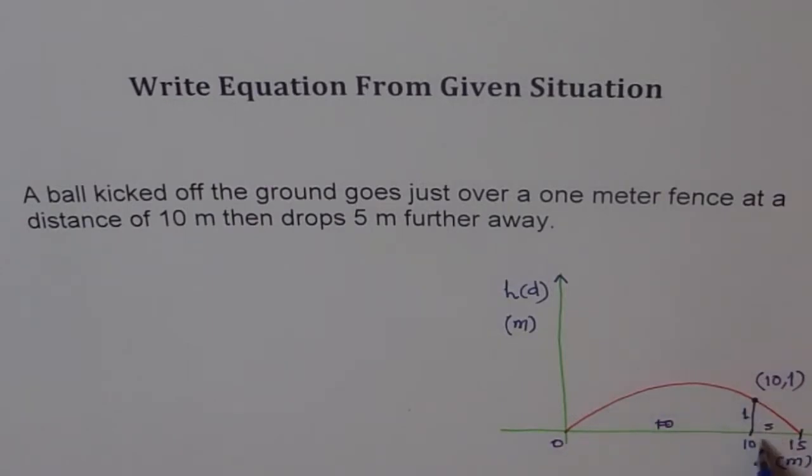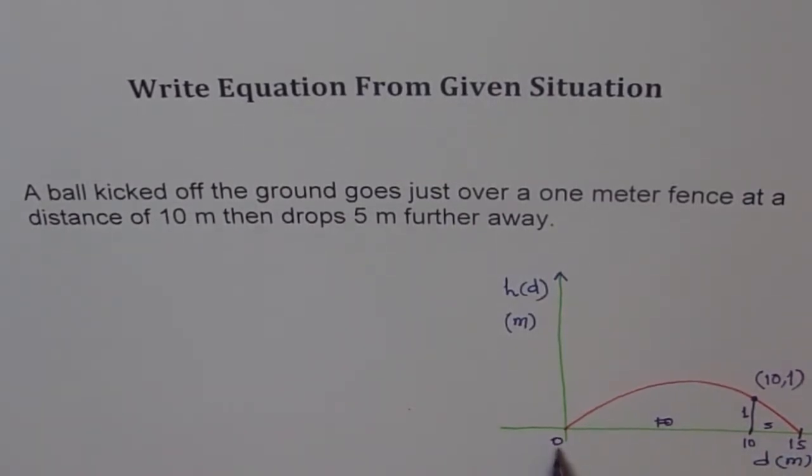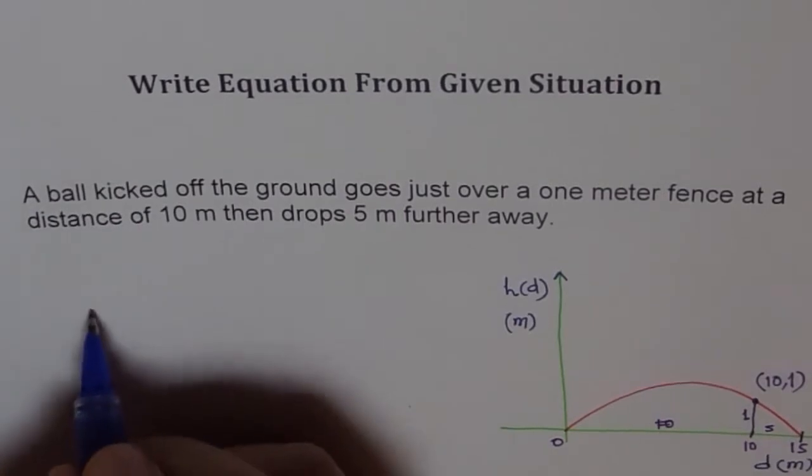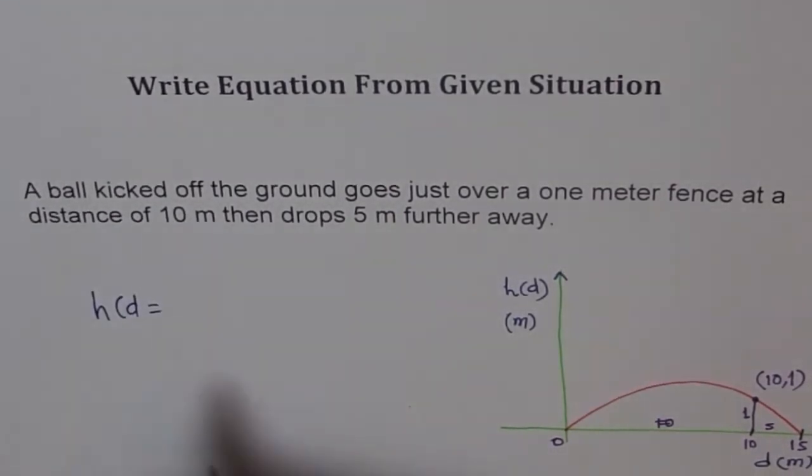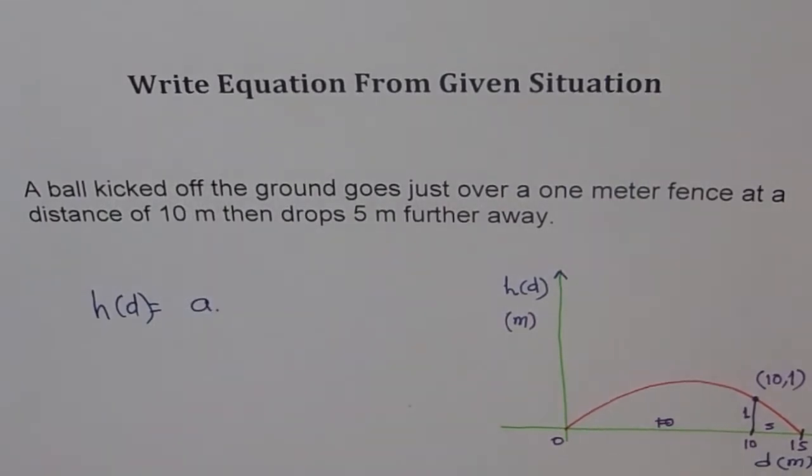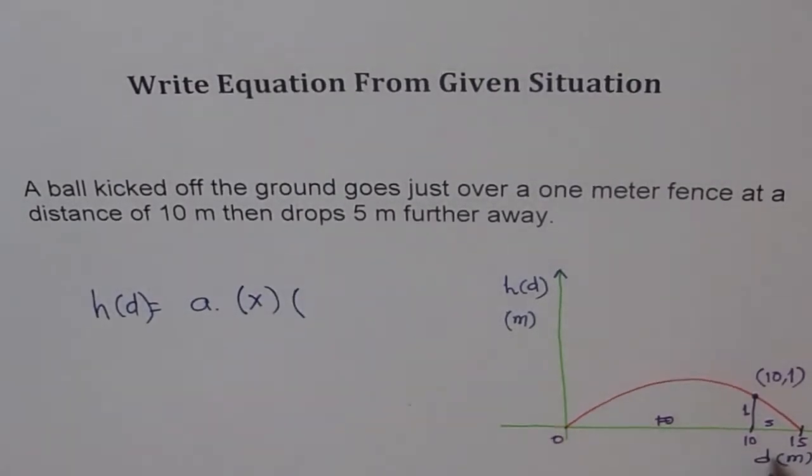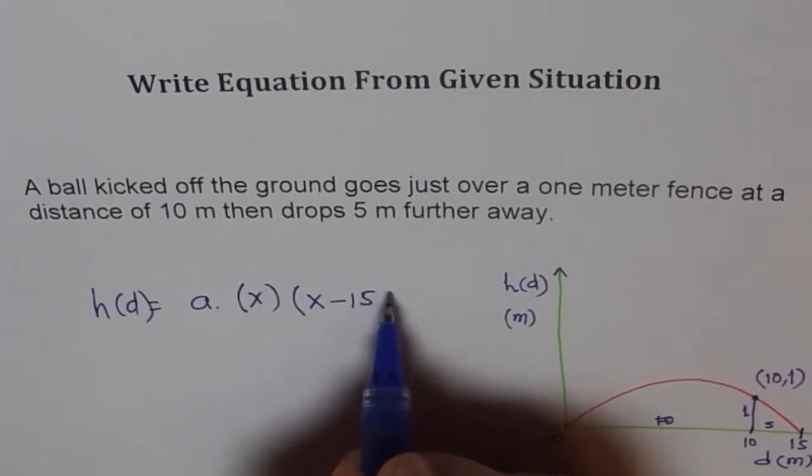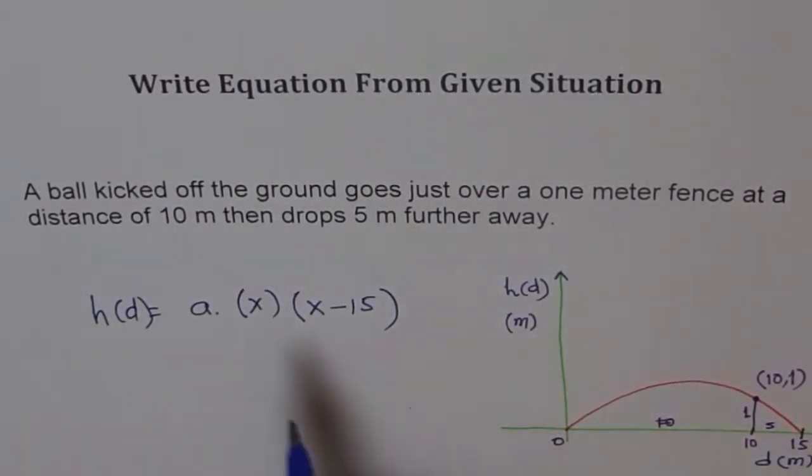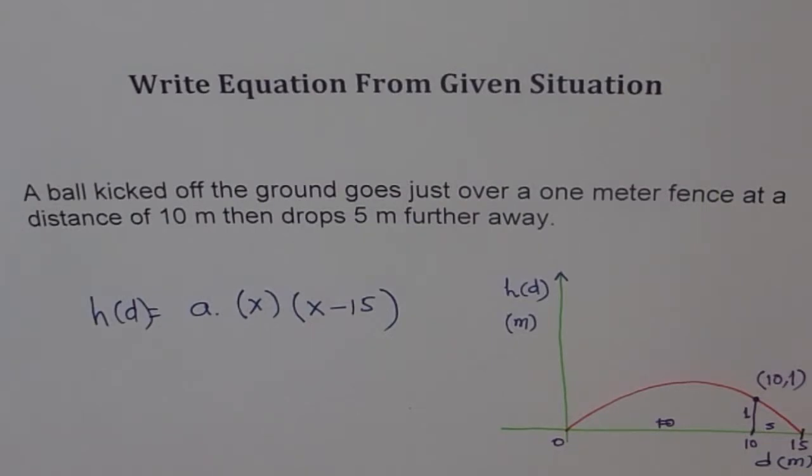Now, so that's kind of an equation we're looking for. Ball is kicked from here, goes over a fence which is 10 meters away and the height of the fence is 1 meter. Just goes by and drops 5 meters further. So now, if we look into it, there are two x-intercepts. One at 0 and the other one at 15. Therefore, I could write this function h(d) as a times, so we have to find what a is. But the family of the curve, we have x as the first intercept and the second one is x minus 15. So that's our equation. It's a quadratic function. When you multiply x with x, we get x squared.